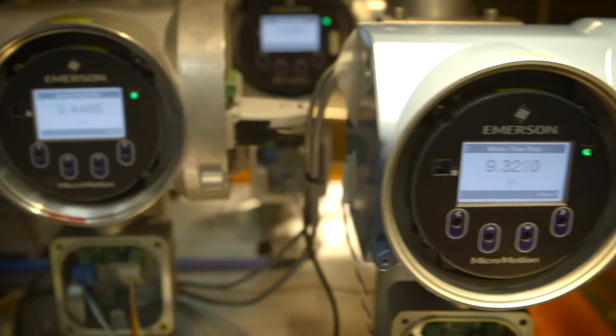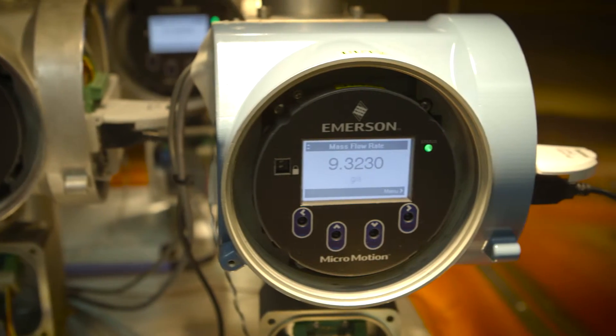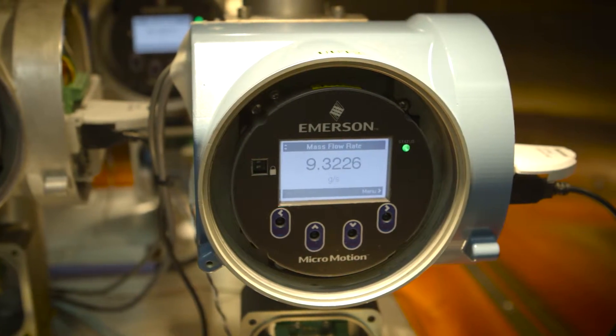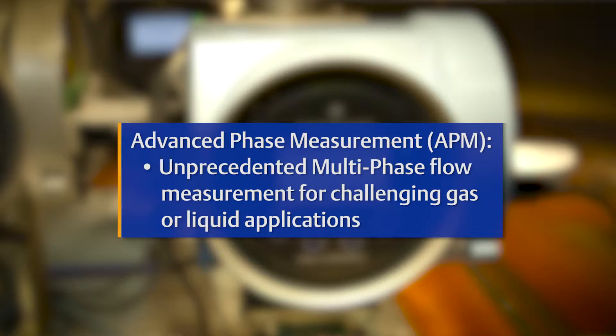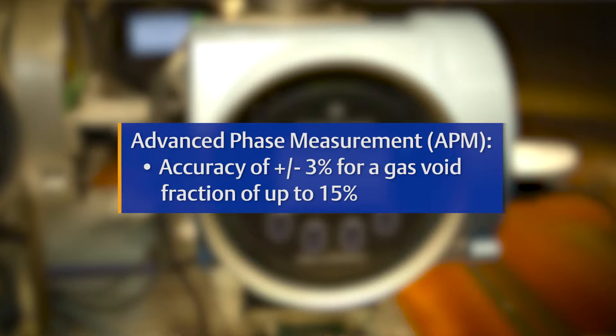Here is a little about the advanced phase measurement software available on the 5700 transmitter. Advanced phase measurement, also referred to as APM, is a software algorithm that provides unprecedented multi-phase flow measurement for challenging gas or liquid applications.